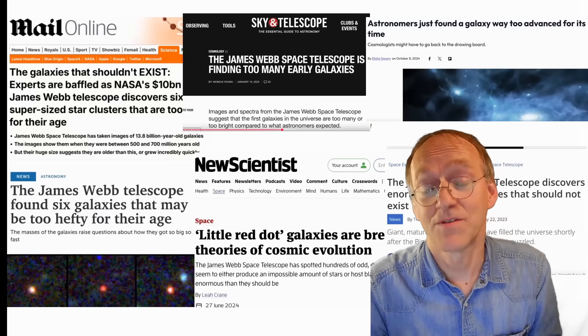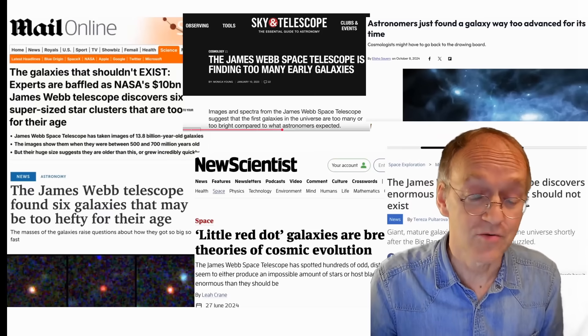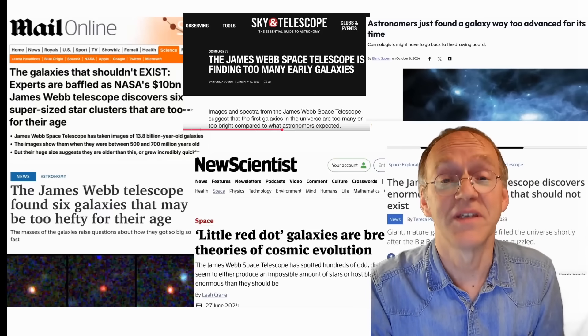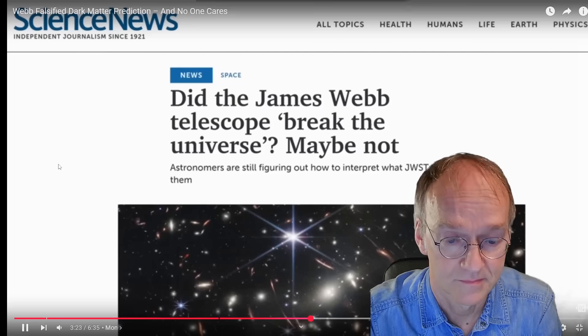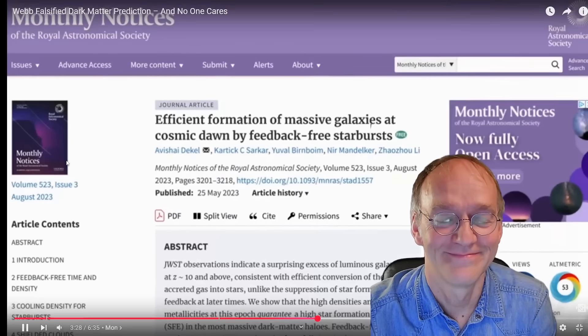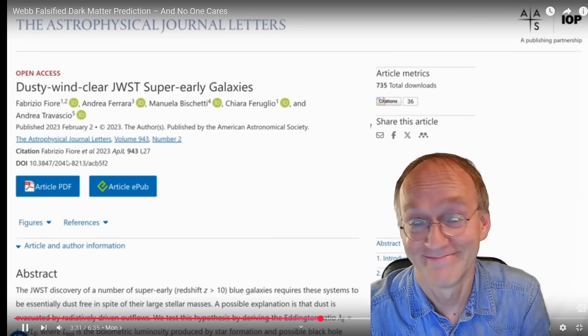Now what astronomers do is to fiddle around with numbers trying to reconcile the model with their data. This is also criticized by Sabine Hossenfelder. Listen. When that fails they'll try to fumble with the dark matter models to make them fit the unwilling data, which they have already begun.